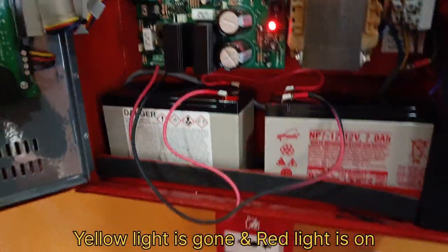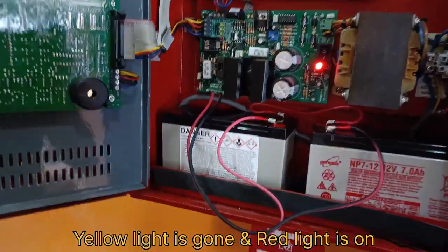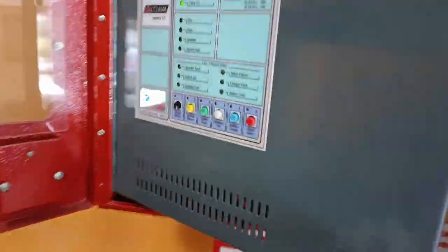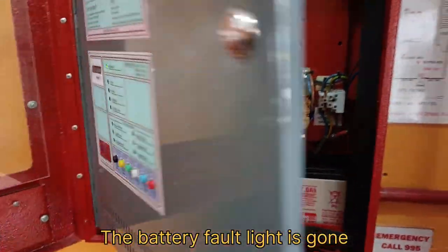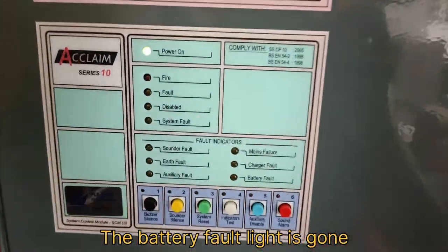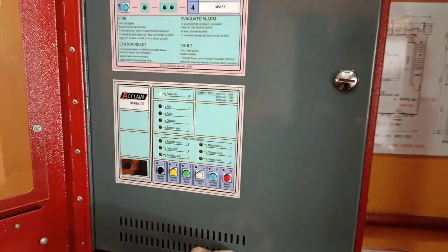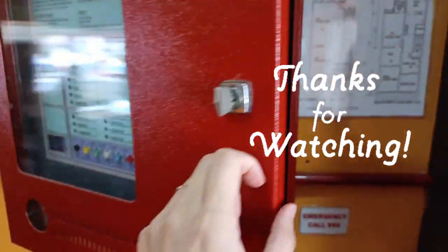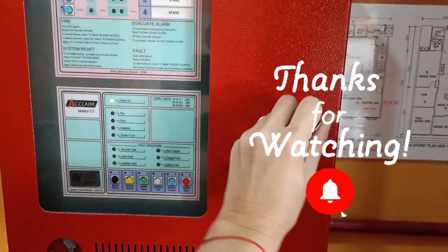Now going back to the panel, you can see the yellow light is gone and the red light is on. At the front panel, you can also see the indicator light is not showing battery fault anymore. Thank you for watching and stay tuned for more DIY videos. Bye!